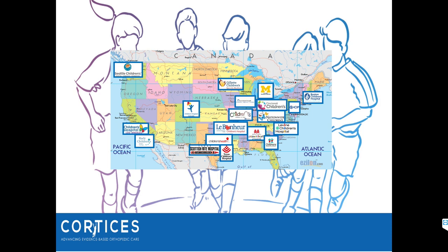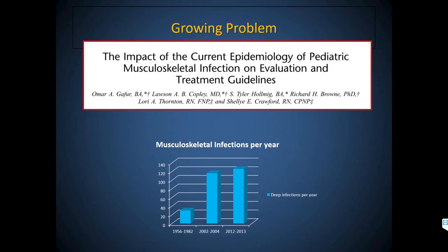CORTICES is a group of pediatric orthopedic PIs at 18 tertiary pediatric medical centers, and we've started to participate in that — it's leading us toward the future through prospective multi-center research. That group was initially assembled to study trauma, but the first conversation in their meeting was that the most interesting thing they see on trauma call is infection, because the trauma is fairly algorithmic while the infection is so complex and workflows so disorganized.